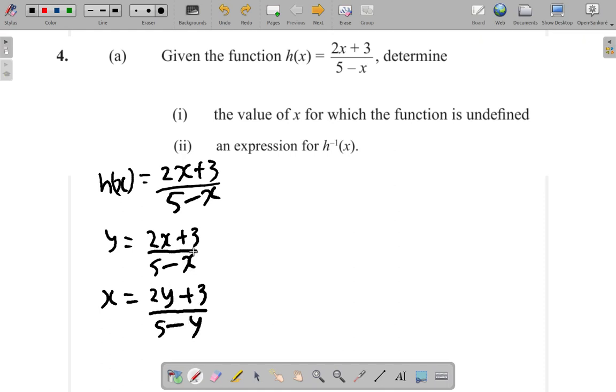After that, you transpose for y, make y the subject. So what we can do here, multiply both sides by 5 minus y. So we have x equals 2y plus 3 over 5 minus y, and multiply by 5 minus y, and this by 5 minus y.